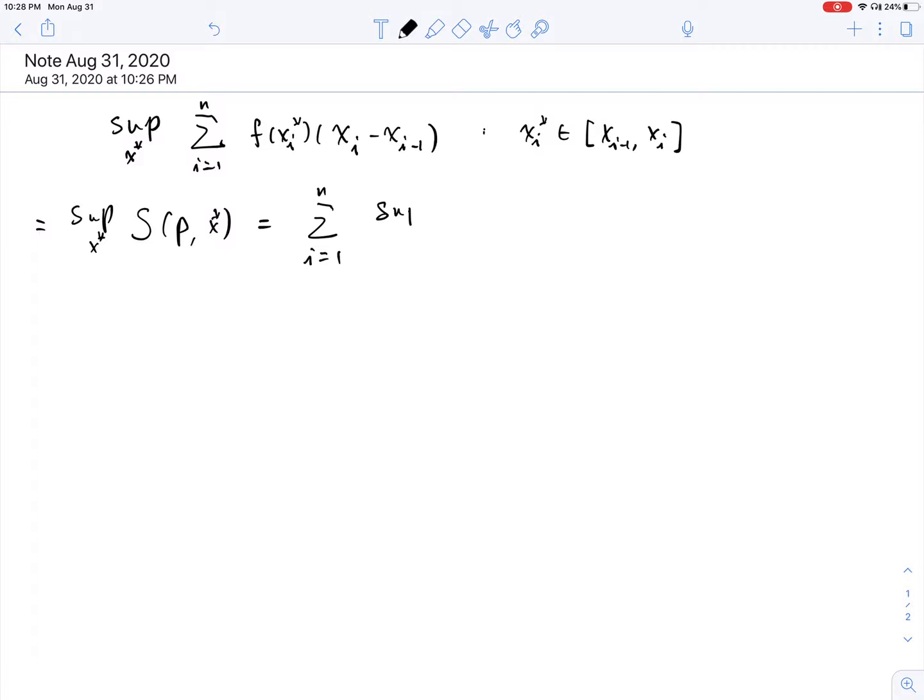And we want to show this is actually equal to sigma i from 1 to n and supremum over xi star of f(xi star) multiplied by the length of the interval. Now, if you look at this, it seems that we distributed this supremum over here inside. We know this is, in general, not true.